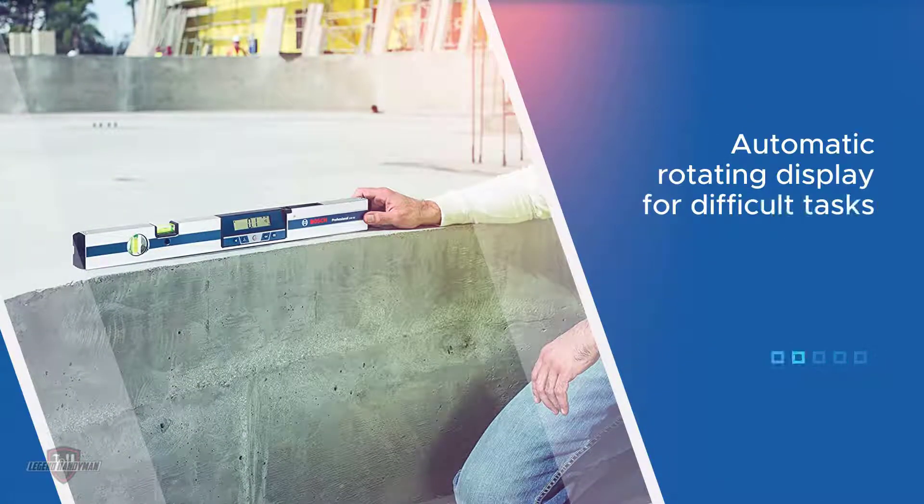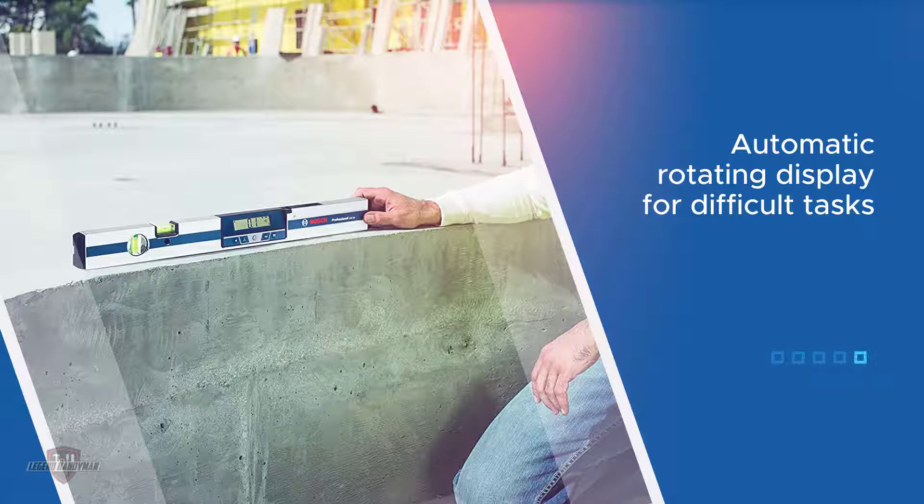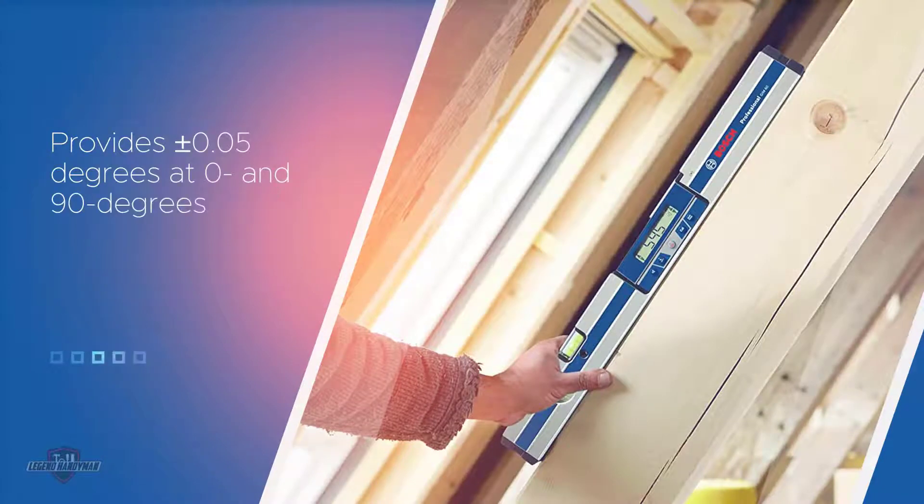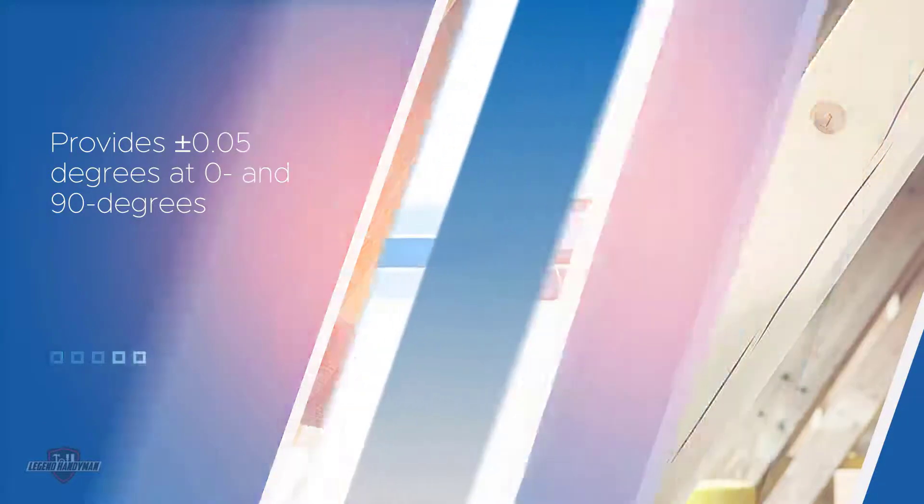The digital display illuminates when there is a hint of dimness in working sites. Additionally, the automatic rotation display option proves to be most favorable in complex tasks. Bosch digital comes with a remarkably accurate level in 0 degrees and 90 degrees.